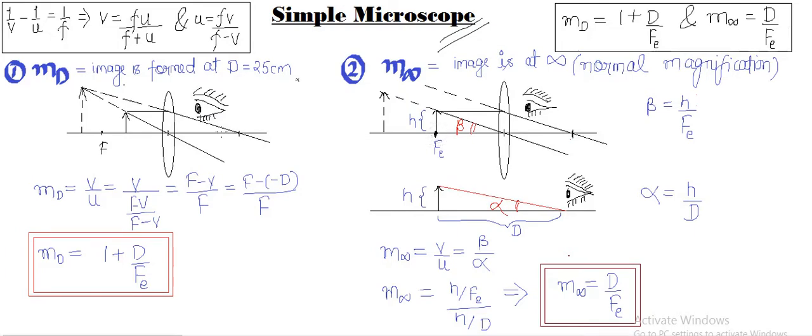These are the two cases in which there will be a magnified image formed behind the lens. The first case is we call magnification as MD when the image is formed at a distance d. This distance is the distance of least distinct vision.